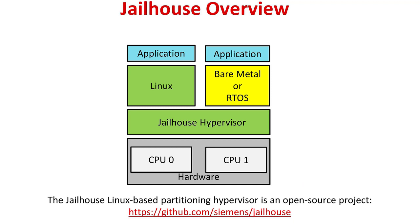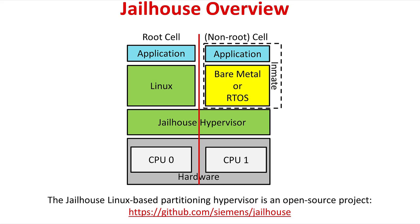Jailhouse is an open source static partitioning hypervisor which cooperates with Linux and runs bare metal applications or modified guest operating systems. Jailhouse does not emulate resources that do not exist on the hardware — it just splits existing hardware resources into isolated compartments called cells. One of these cells runs the Linux OS and is known as the root cell. Other non-root cells borrow CPUs and devices from the root cell as they are created. These non-root cells are called inmates.